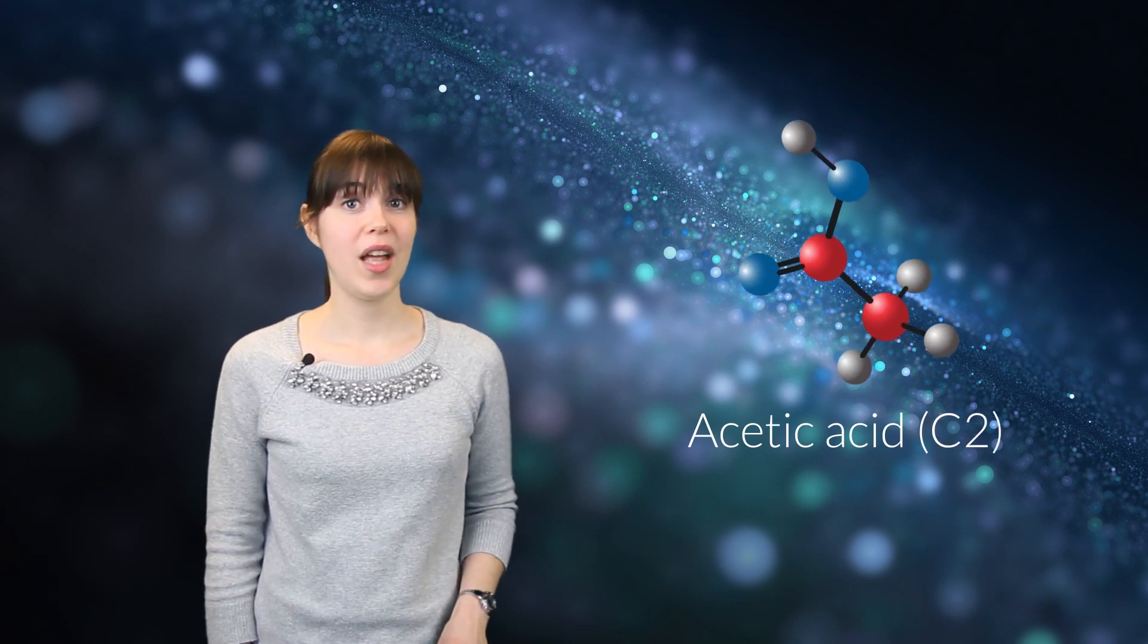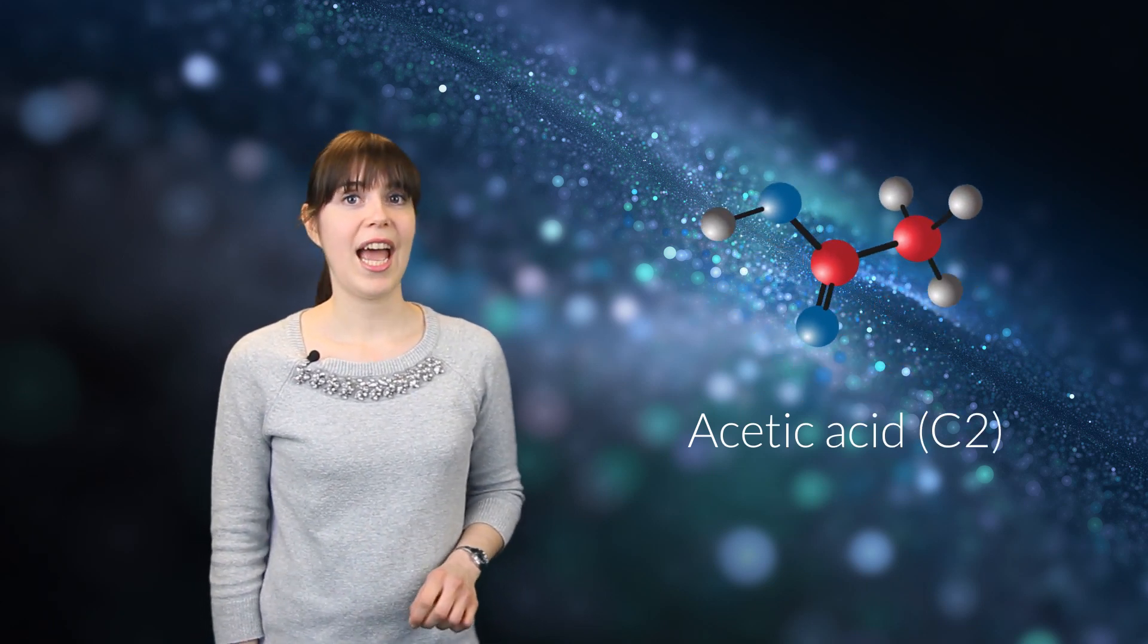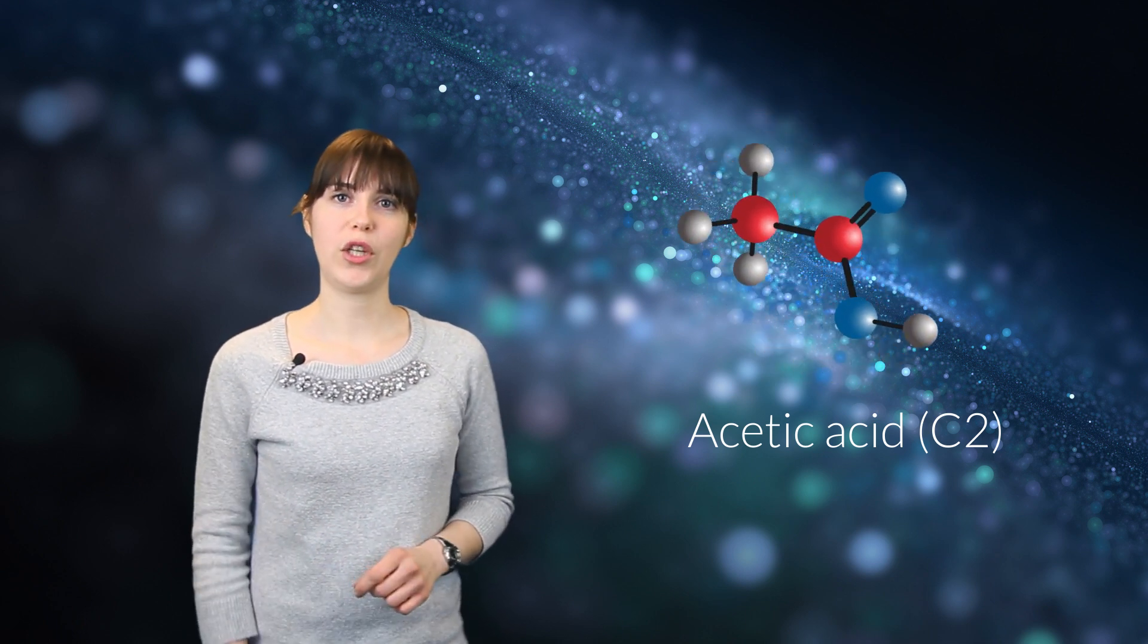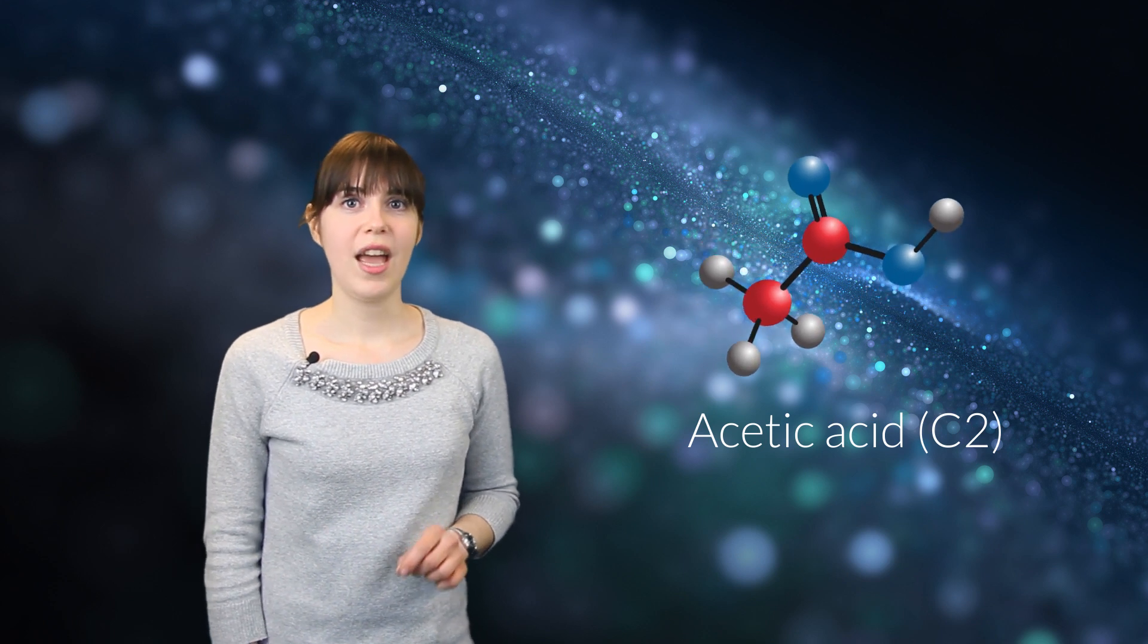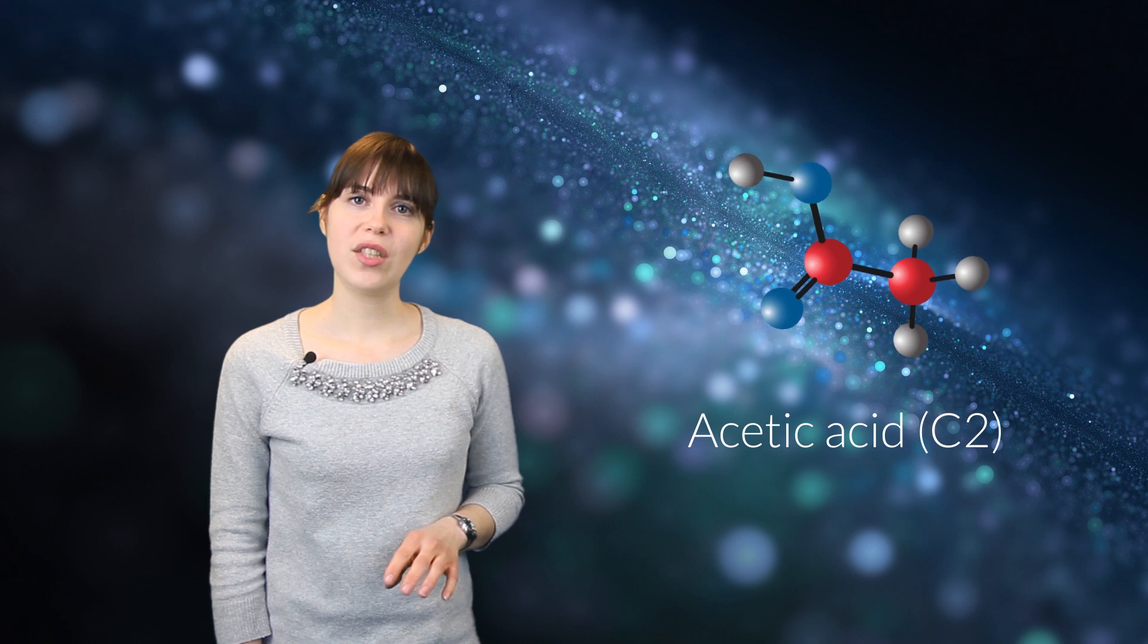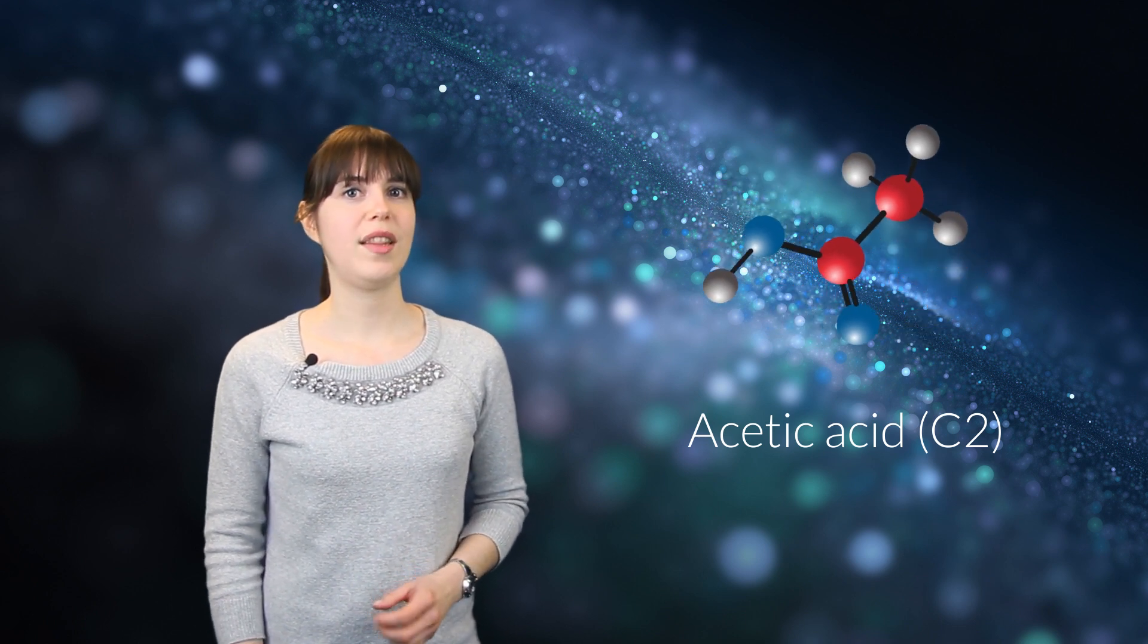Next up is acetic acid. This molecule has two carbon atoms and is a combination between an antimicrobial and anti-mold molecule. It's not as strong as formic acid and it's also not as tasty, so that's why it's not being used in animal feed that often.